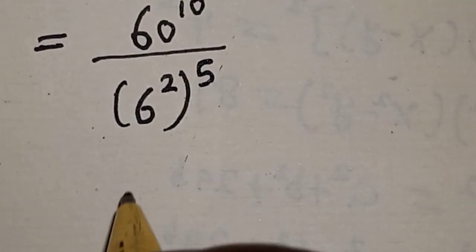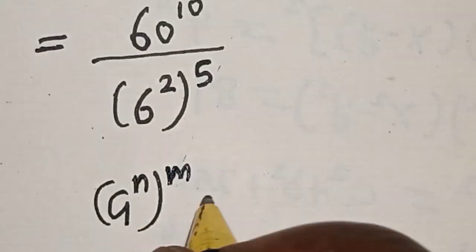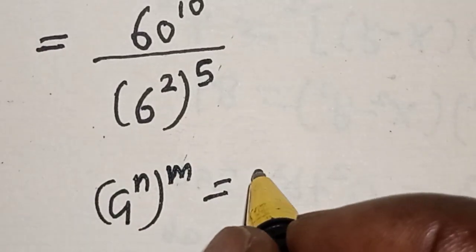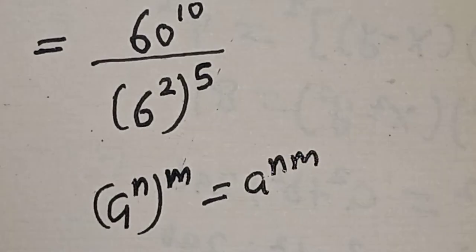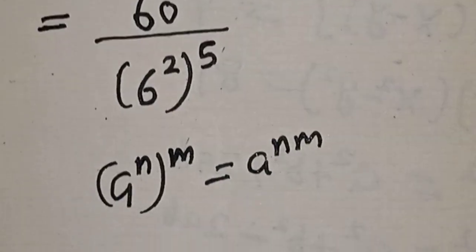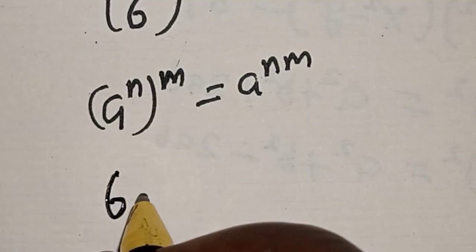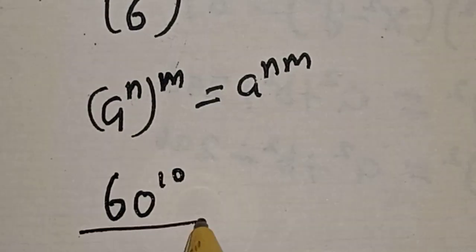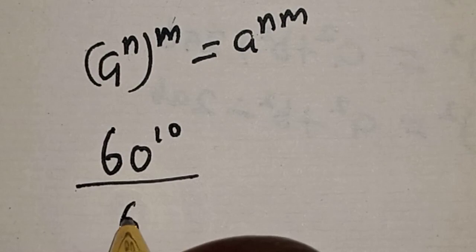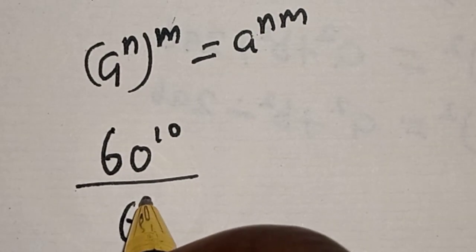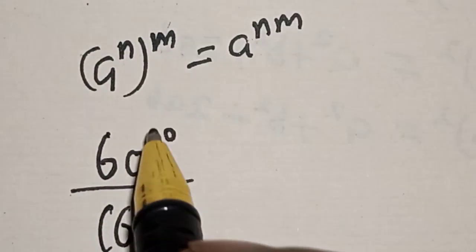Remember this rule: if you have a raised to power n, raised to power m, it is equal to a raised to power n times m. Applying this, we get 60 raised to power 10 divided by 6 raised to power 10, that is 2 times 5.